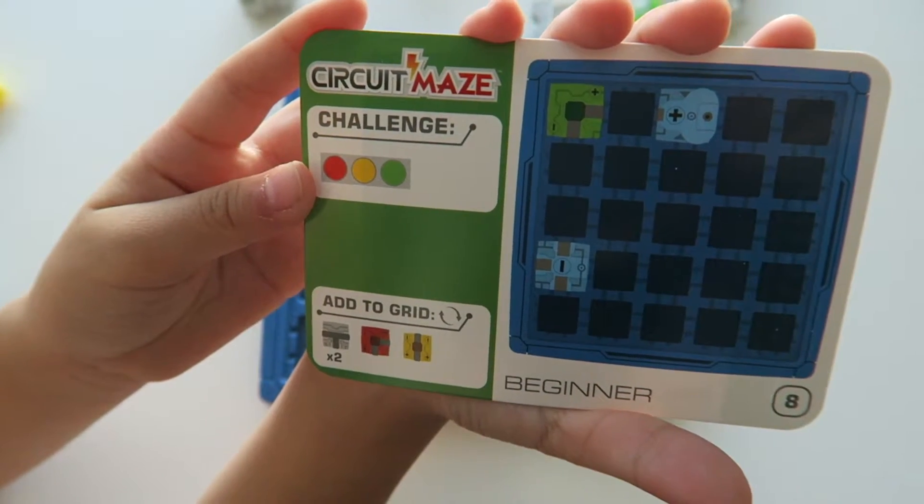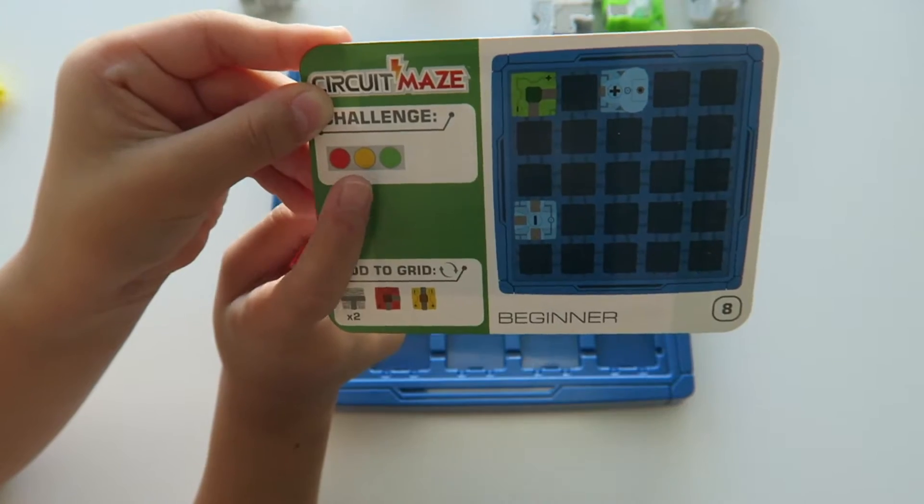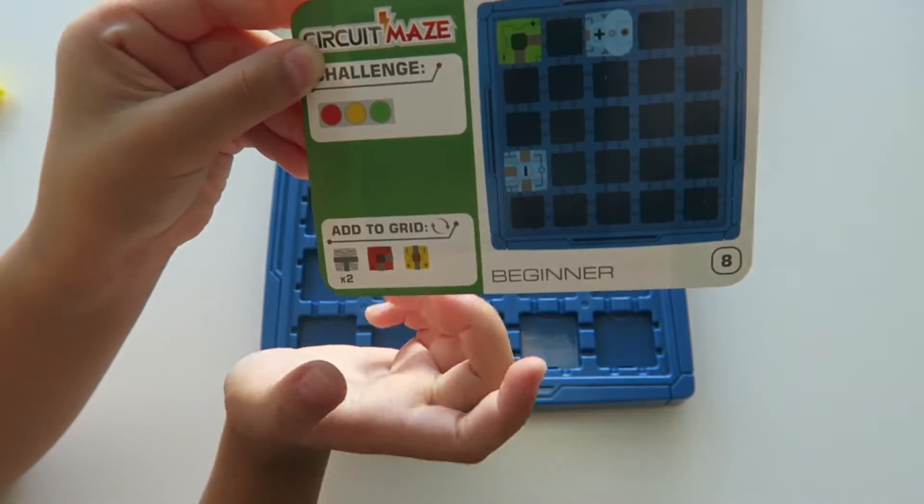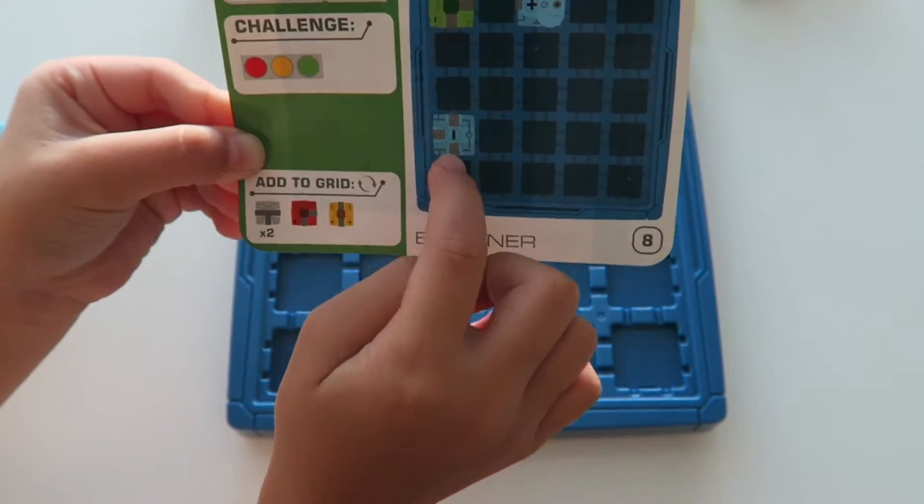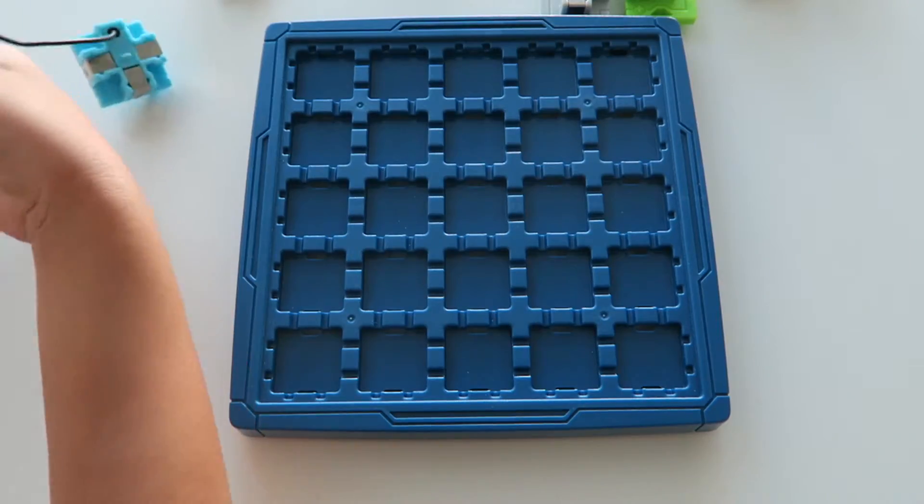This is my challenge card. So I'm going to have to light up red, yellow, and green. So this is going to be really challenging. I'm going to have to add these tokens on the grid.